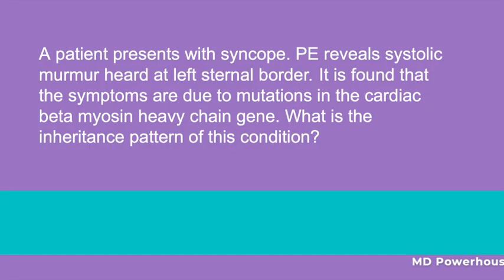A patient presents with syncope. Physical exam reveals a systolic murmur heard at the left sternal border. It is found that the symptoms are due to mutations in the cardiac beta-myosin heavy chain gene. What is the inheritance pattern of this condition? Autosomal dominant.